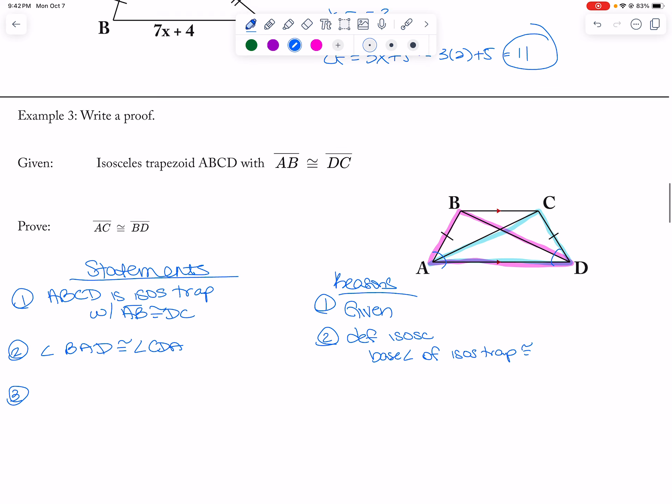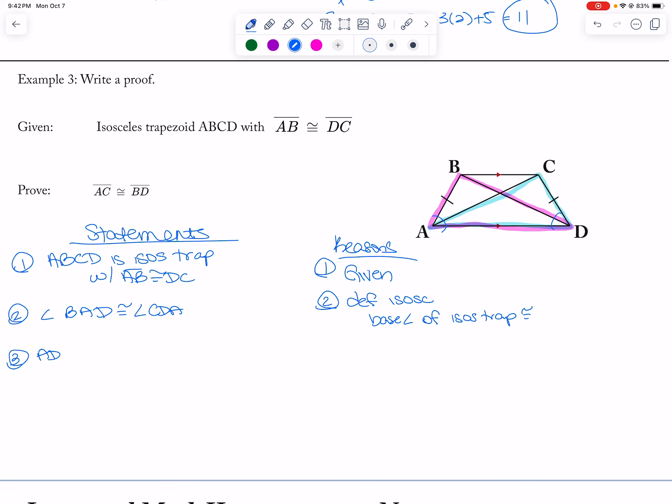And then three, AD is congruent to itself, which is reflexive. And then the triangles are congruent, so triangle BAD is congruent to triangle CDA by, getting ahead on my numbers, side angle side.